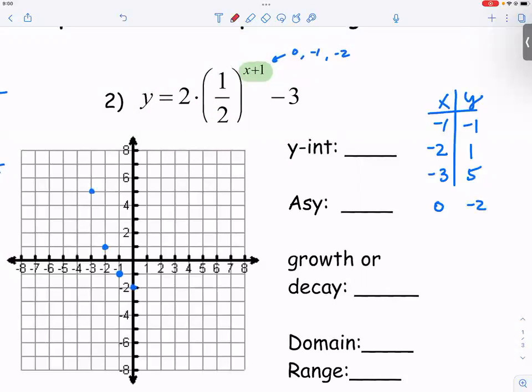And our horizontal asymptote, because it has been moved down three units.